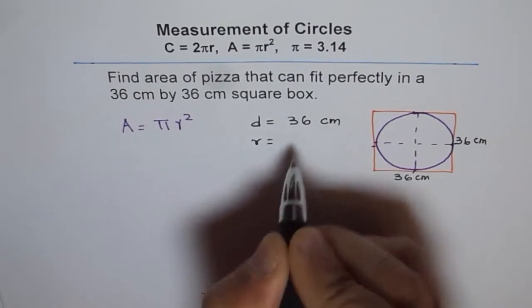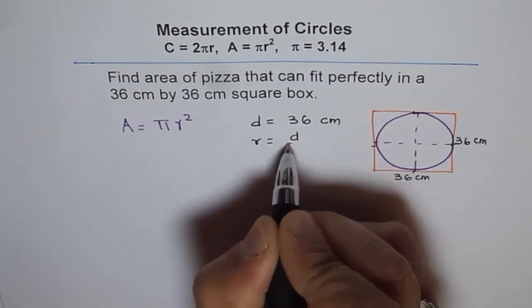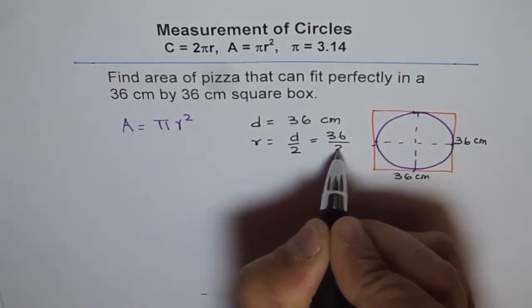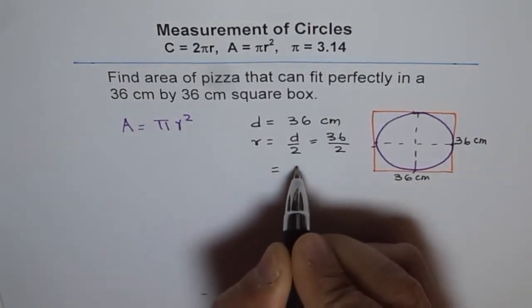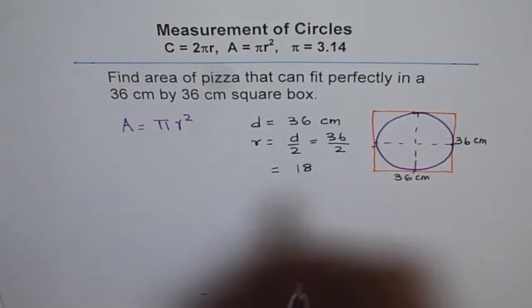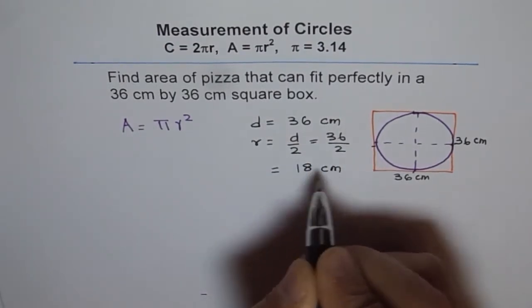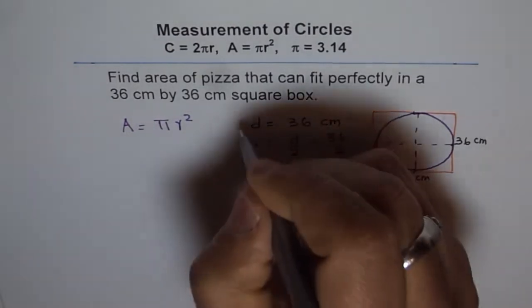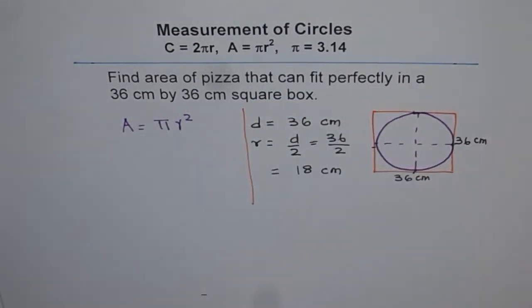Radius is going to be half of diameter, diameter divided by 2. That is 36 divided by 2 and that gives us a value which is 18. So 18 cm is the radius of our circular pizza. So we are assuming circular pizza here for this problem.